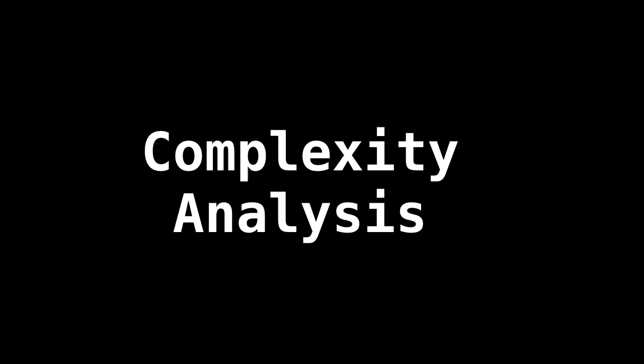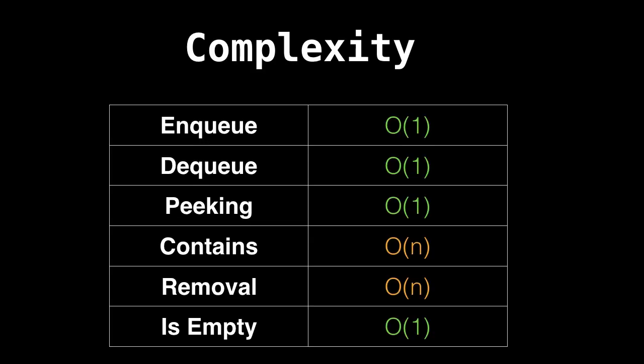Concerning complexity analysis of a queue: enqueuing and dequeuing operations are constant time. There's also another operation called peeking, which means looking at the value at the front of the queue without removing it — also constant time. However, checking if an element is contained within the queue is linear time, since we'd potentially need to scan through all elements. Similarly, removing an element internally — not dequeuing, but actually removing a specific element — also requires linear time in the worst case.